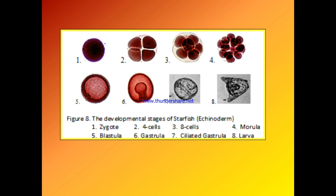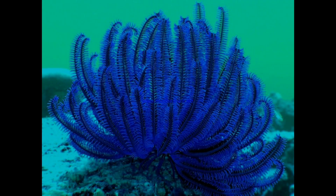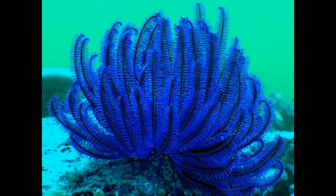Some amazing facts about starfish: starfish don't have a brain. A starfish can have more than 40 arms — usually a starfish has 5 arms, but as an exception some can have more than 40 arms. Most starfish can live up to 3 to 5 years. Here is a beautiful image of a starfish with more than 40 arms.